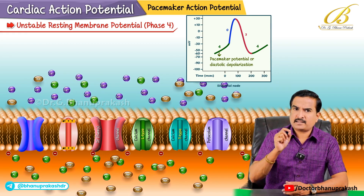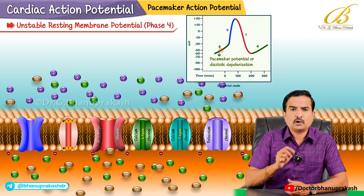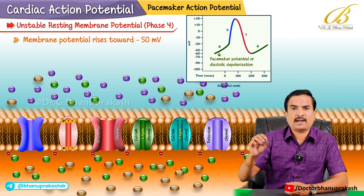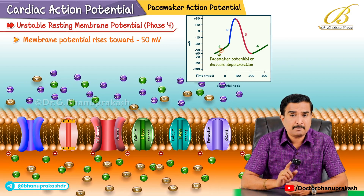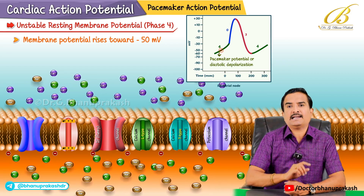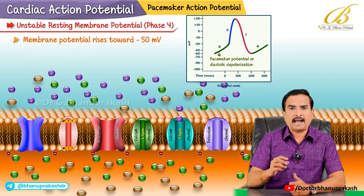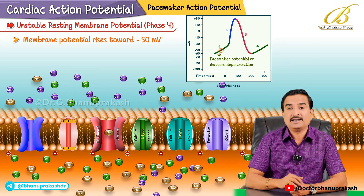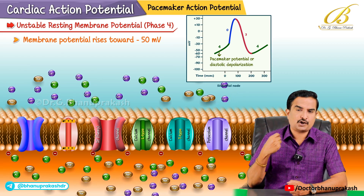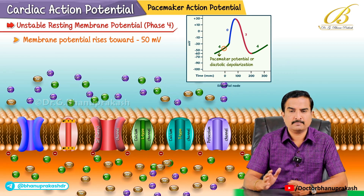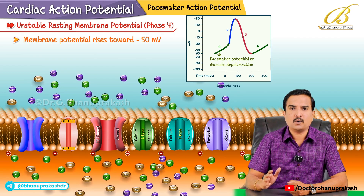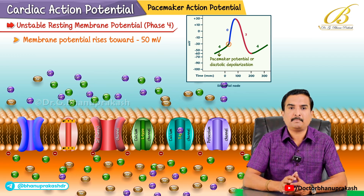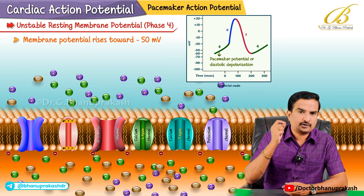From minus 60 millivolts, as the membrane potential slowly rises towards minus 50 millivolts, T-type calcium channels open briefly, adding a little extra inward current - more positive ions entering - that helps the cell approach the threshold. So in the first half it is sodium, and in the second half it is calcium. The threshold is reached because of these positive ions entering the pacemaker cells.